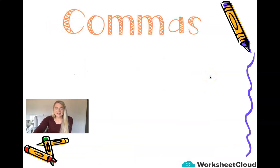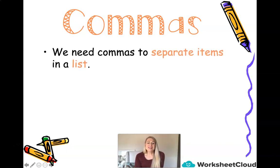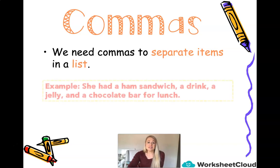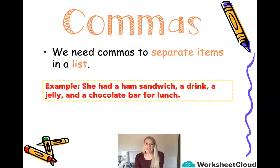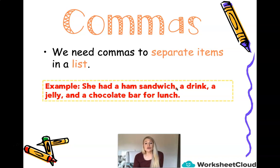Okay, how are you guys doing? I'm sure you're doing fantastic. The next punctuation we are going to revise is commas. We need commas to separate items in a list. For example: she had a ham sandwich, comma, a drink, comma, a jelly, comma, and a chocolate bar for lunch. That sounds like a delicious lunch! Commas are used, boys and girls, to sort of list and separate items. It is a valuable punctuation mark, and it allows us to distinguish one item from the next.